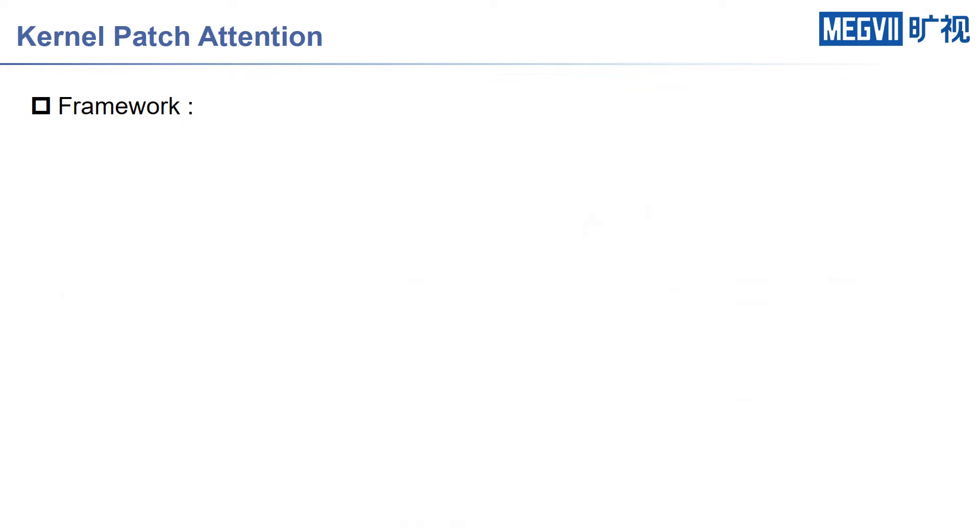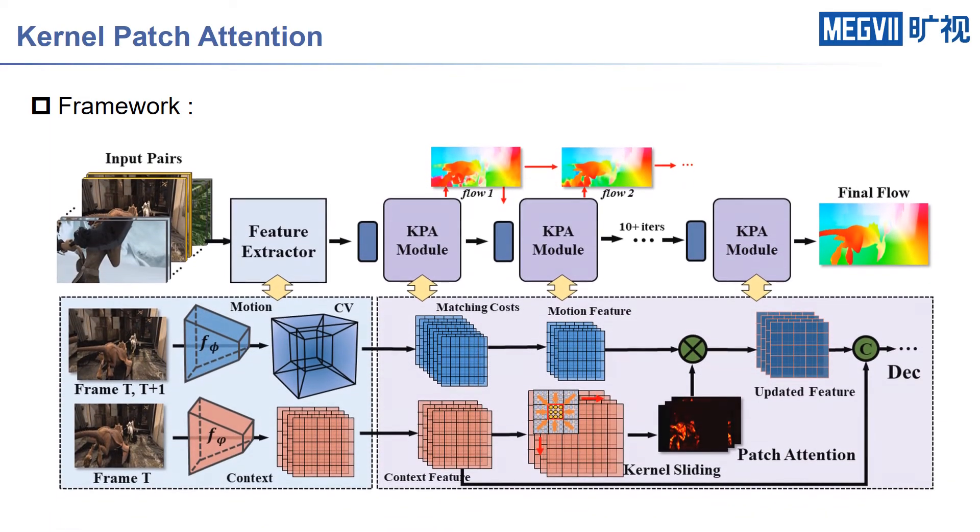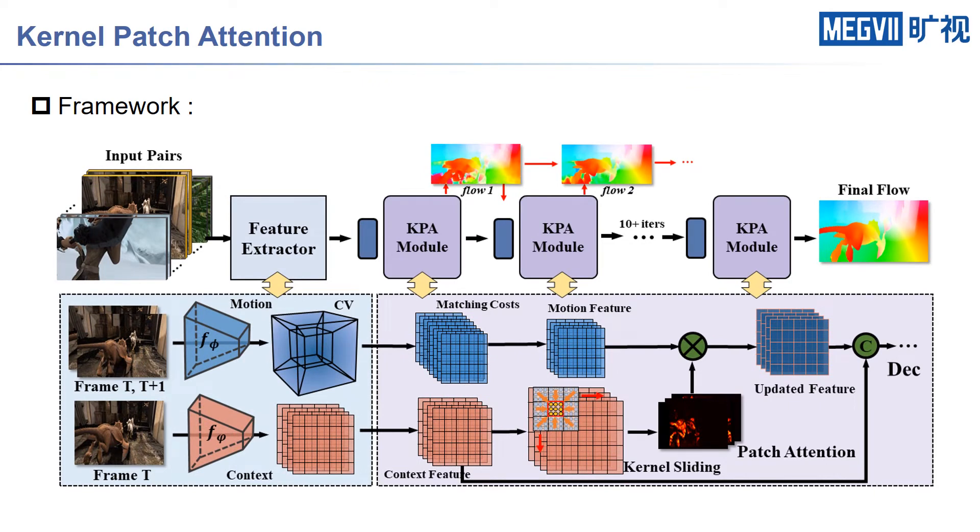To tackle these issues, we introduce a novel kernel-based approach, namely kernel patch attention for optical flow, which resolves the matching ambiguities by taking the local relations into consideration and explicitly making a smoothness constraint.